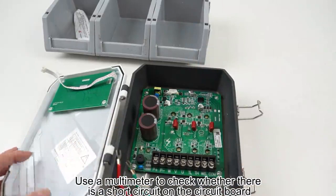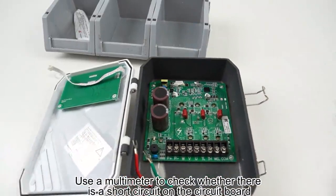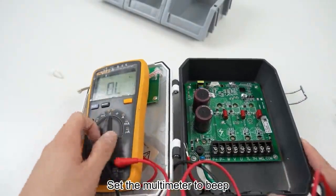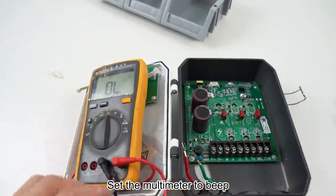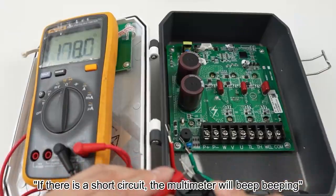Use a multimeter to check whether there is a short circuit on the circuit board. Set the multimeter to beep mode. If there is a short circuit, the multimeter will beep.